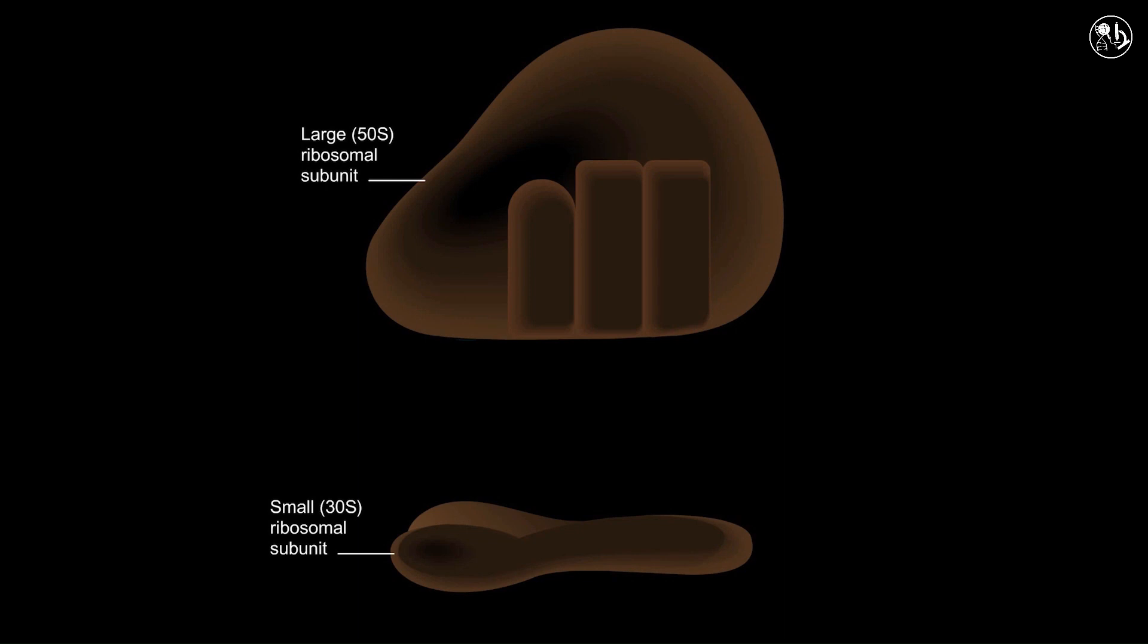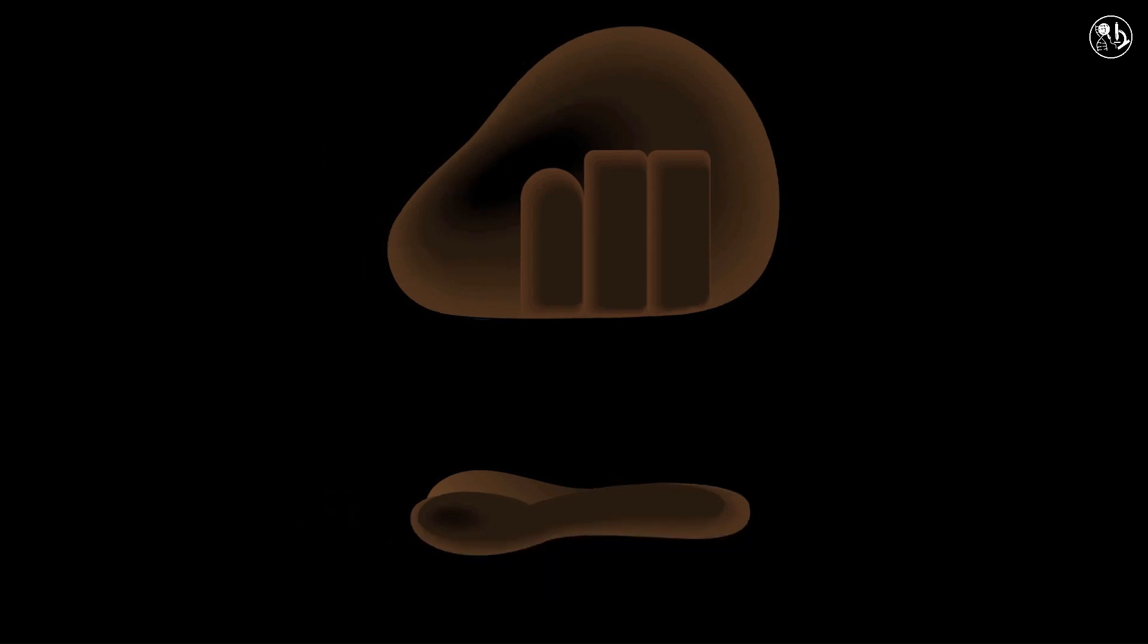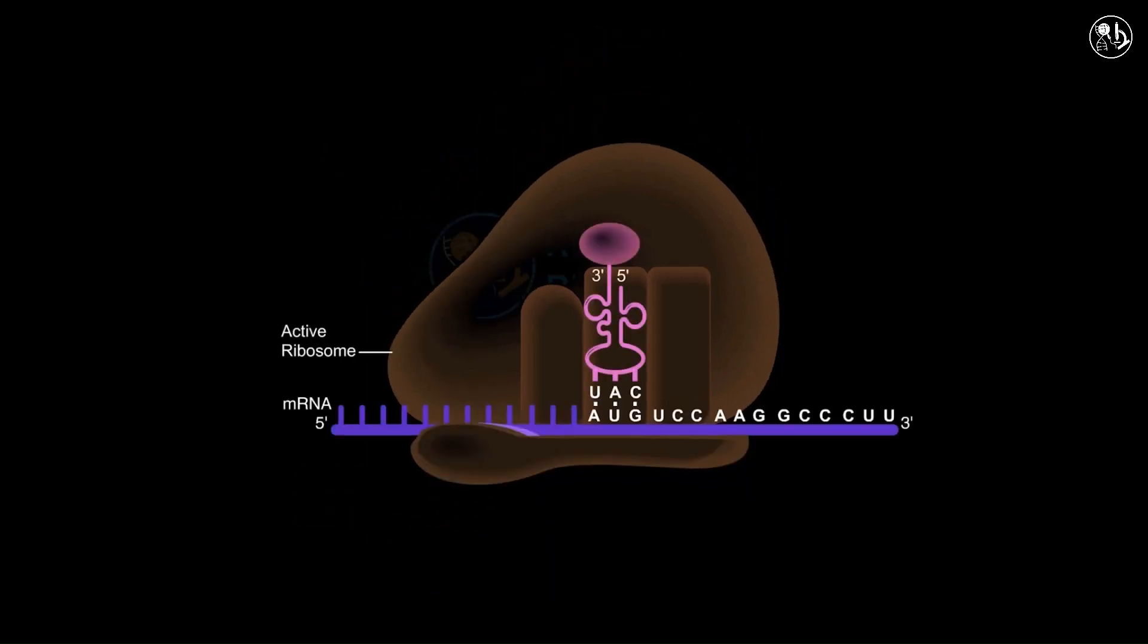Ribosomes are made of ribosomal RNA and various proteins. The active ribosome has three tRNA binding sites, namely E or exit, P or peptidyl, and A or aminoacyl.